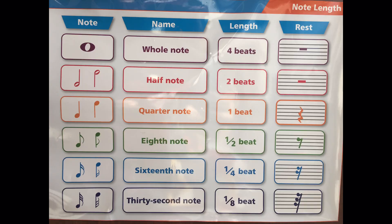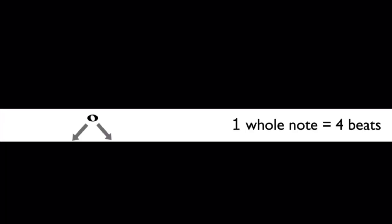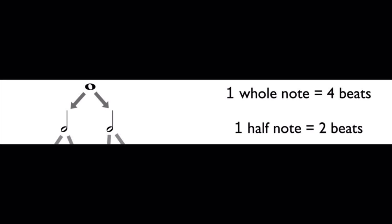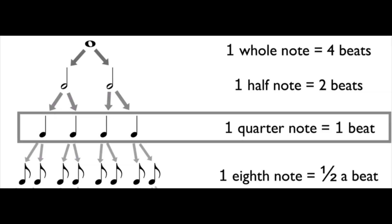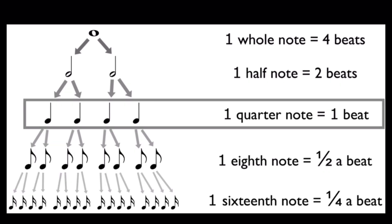In music we have notes that tell us how to clap and how long to count a note. A whole note would be four beats, as you see on the screen. A half note is two beats, a quarter note is one beat, an eighth note is half of a beat, and a sixteenth note — the one that we're focusing on today — is a quarter of a beat.